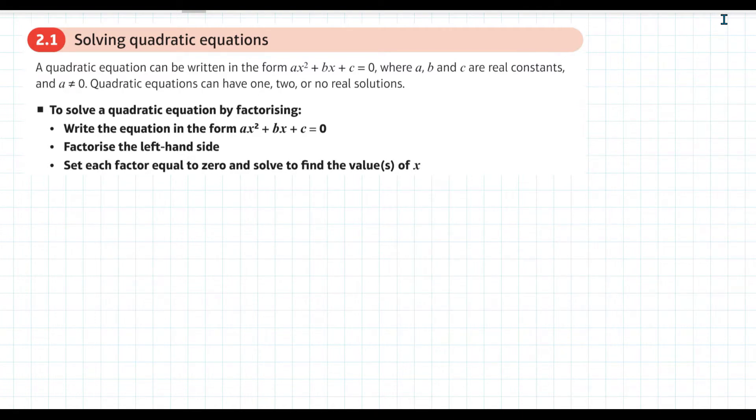Quadratic equations can have one, two, or no real solutions. If you remember from GCSE, what we have is the discriminant. That's the part under the square root of the quadratic formula, b² - 4ac.